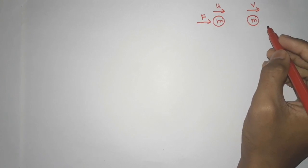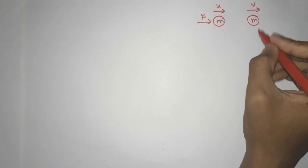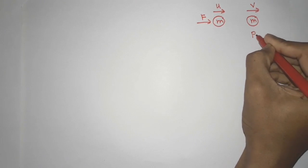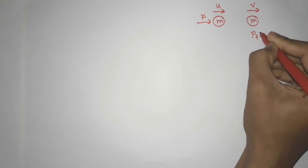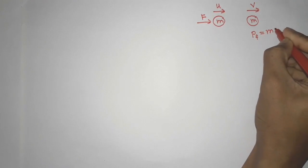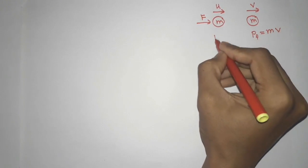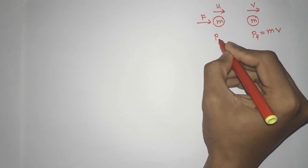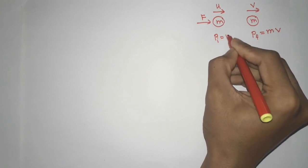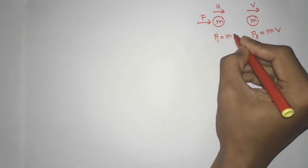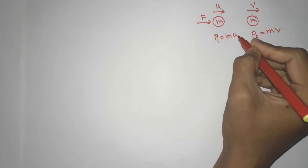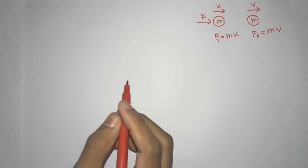Now, what is the momentum? The final momentum, that is p-final, will be equal to mass into final velocity. And what is p-initial? Initial momentum will be given by mass into initial velocity, that is equal to u.